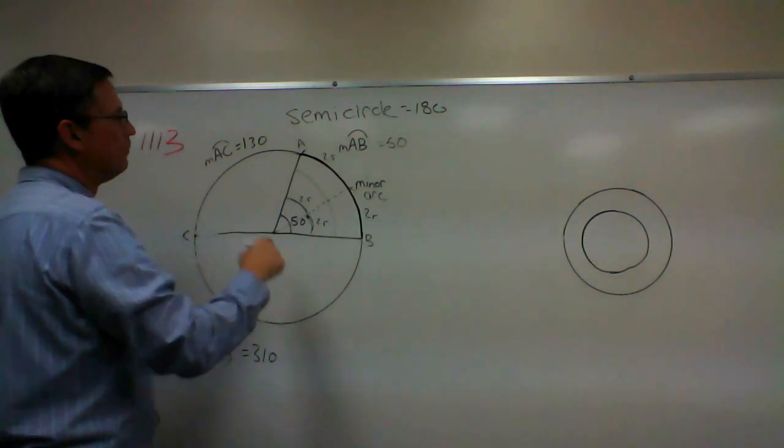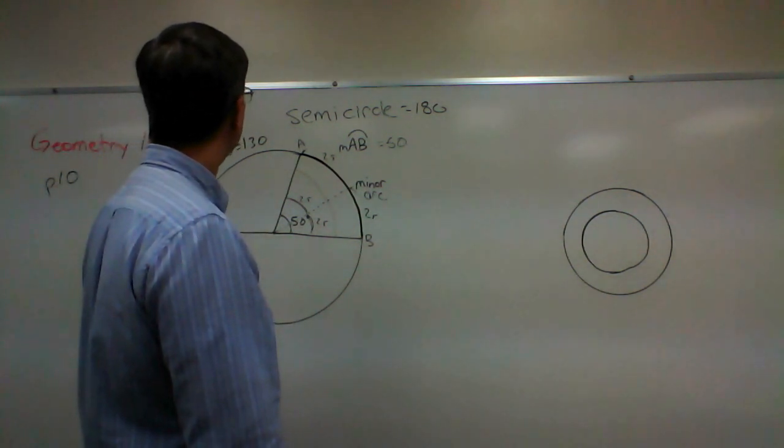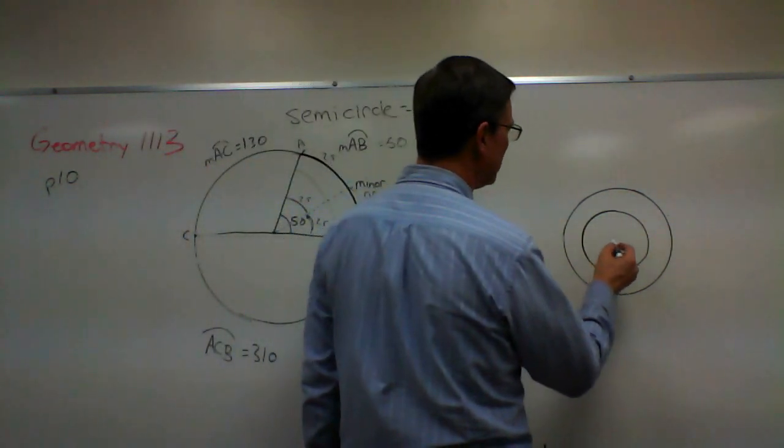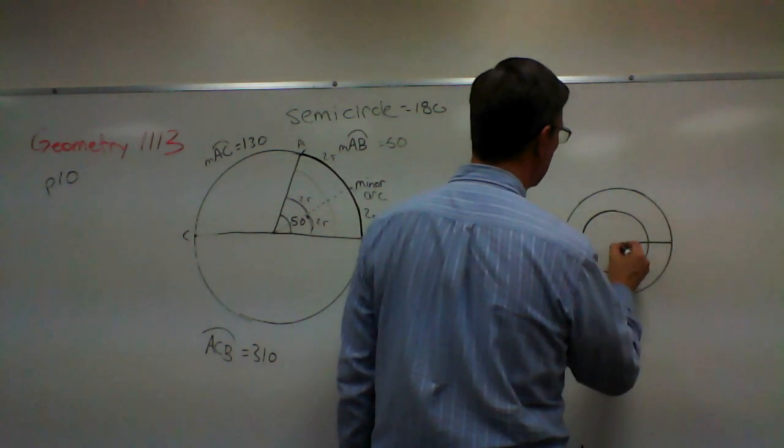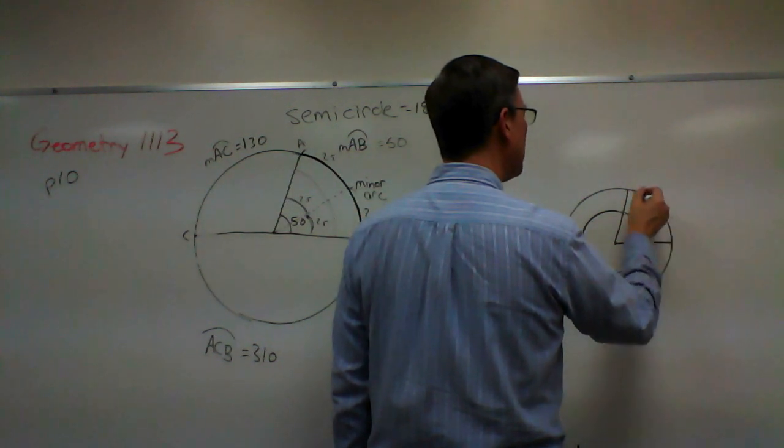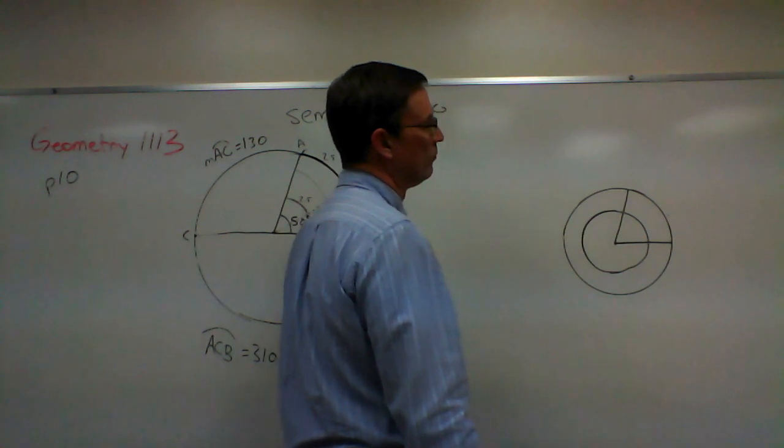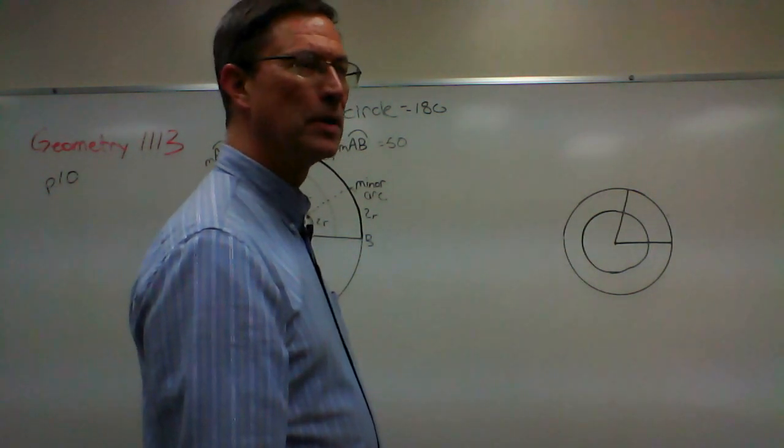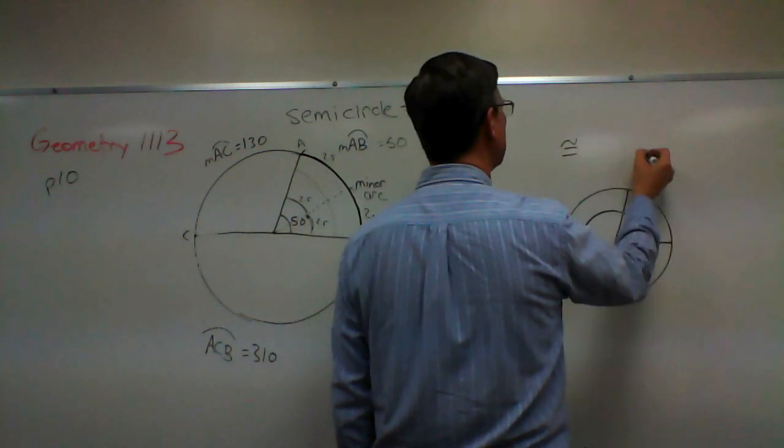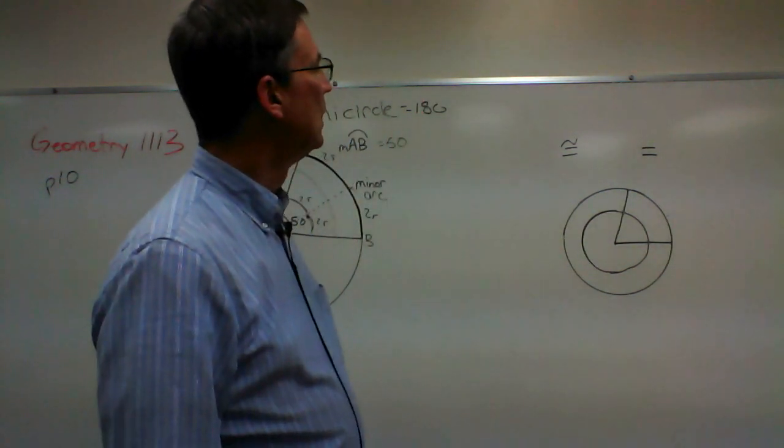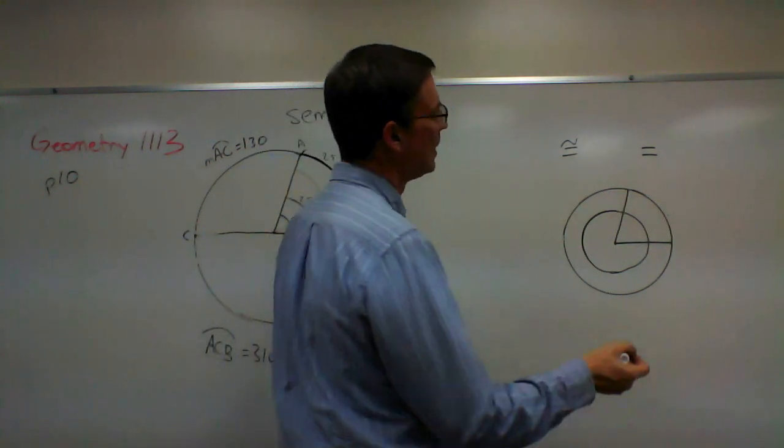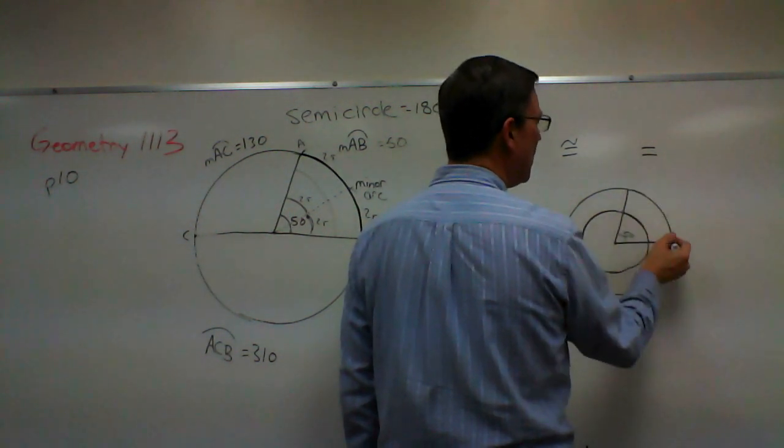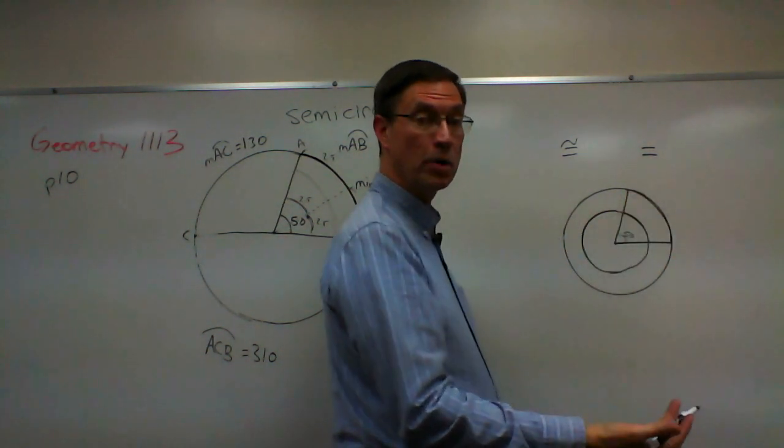The angles might be congruent. Let's look at this: is this arc congruent to this arc? That's a tricky one. Congruent—what is the difference? We talked about this in the first pace: equals versus congruent. Equals means the measure of something. If this is 50 degrees, how many degrees is this arc? That would also be 50. How many degrees is this arc? That would also be 50.